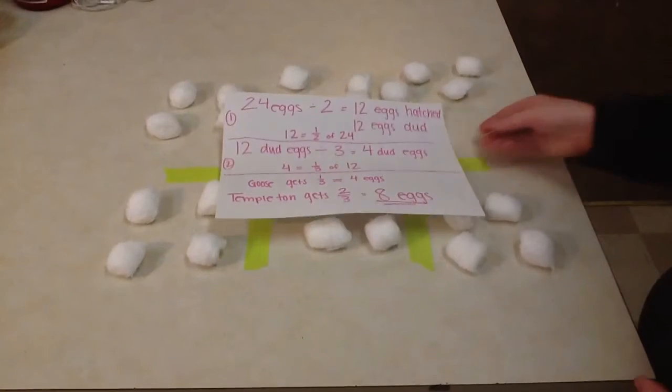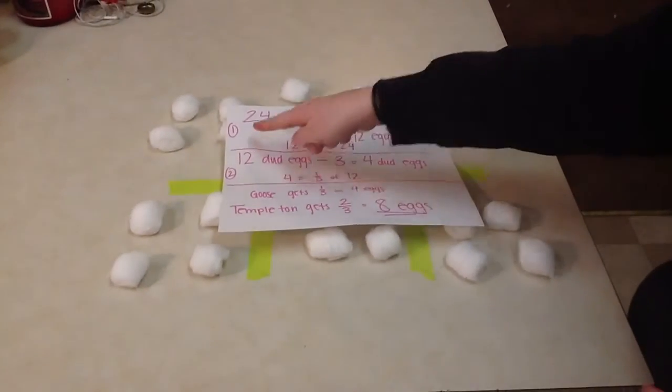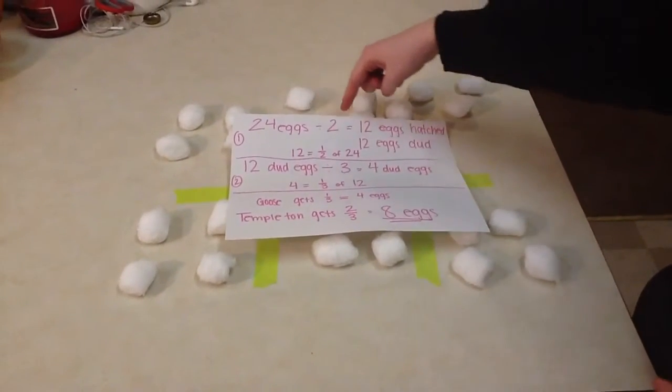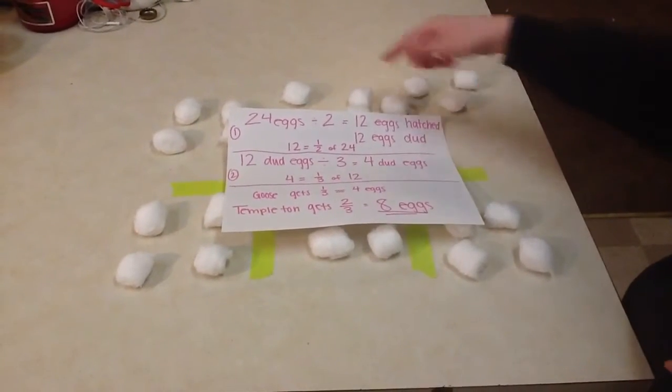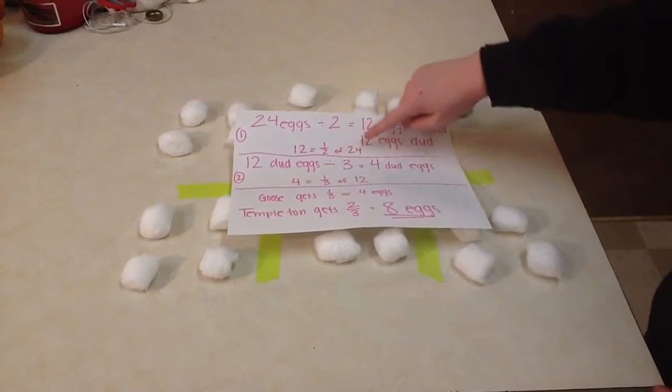If you look at it on paper, the first part we did all 24 eggs divided by 2, so into 2 parts, and that was 12 eggs hatched and 12 eggs were duds. So 12 equals half of 24.